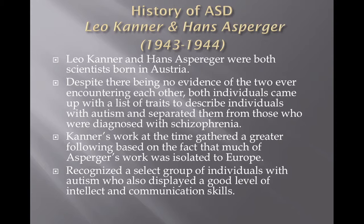Then we move on to Leo Kanner and Hans Asperger in the 1940s, who picked up on the work of Bleuler but separated individuals with autism from individuals with schizophrenia. They were both born in Austria and both identified a list of traits for these individuals. Despite the two never actually encountering each other, Kanner's work obtained more popularity than Asperger's, mostly because Asperger's work was isolated to Europe. They both recognized a select group of individuals with autism who displayed a good level of intellect and communication skills, which we consider to be high-functioning autism.